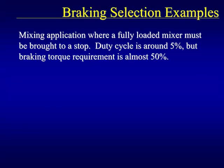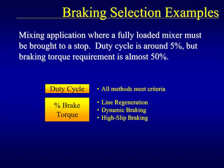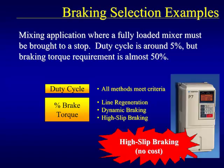Consider a mixing application where a fully loaded mixer must be brought to a stop. The duty cycle is around 5%, but the braking torque requirement is almost 50%. Comparing the application to the duty cycles provided for each braking method, all braking methods meet the duty cycle requirements. However, DC injection is not capable of meeting the braking torque requirements, leaving line regeneration, dynamic braking, and high-slip braking as the available methods. Because the application is a high-inertial load, high-slip braking would be the best method because it meets the requirements and requires no additional cost.